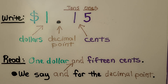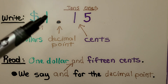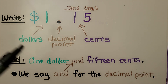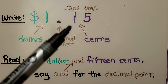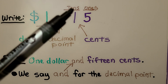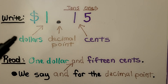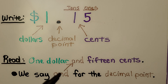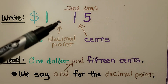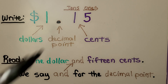If we had 15 cents more than $1, we could write the dollar sign, a $1, a decimal point, and 15 cents. These are the tens, these are the ones, and we would have $1 and 15 cents. That's how we would read it. We would say 'and' for the decimal point — $1 and 15 cents.